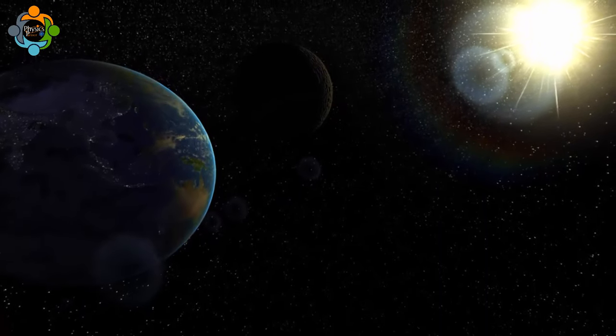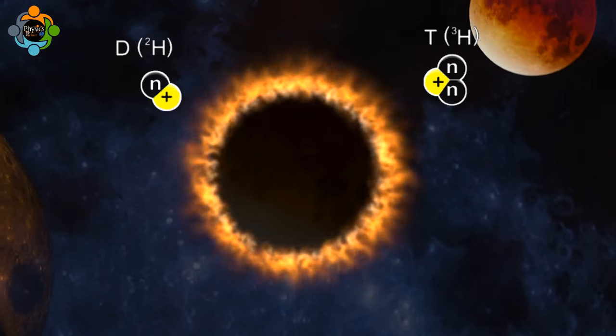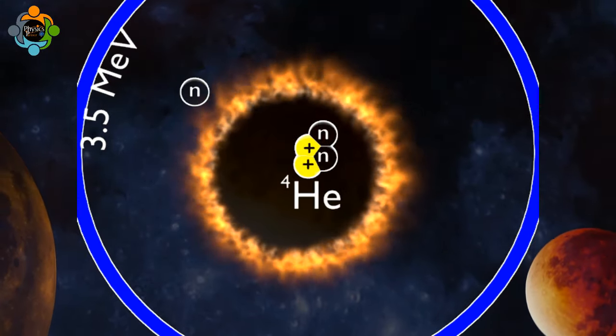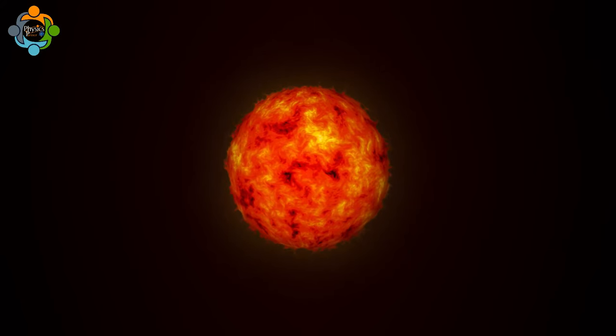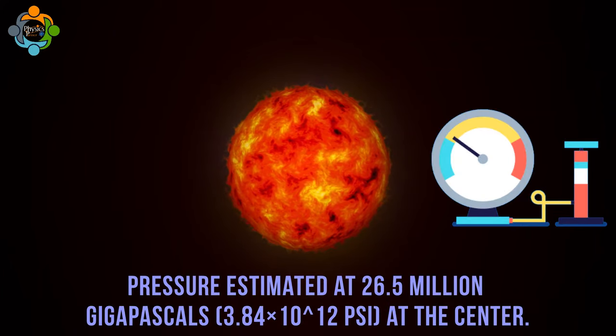Thermonuclear fusion is the process by which the Sun produces energy through the combination of hydrogen nuclei to form helium. This fusion reaction occurs at incredibly high temperatures and pressures in the core of the Sun.